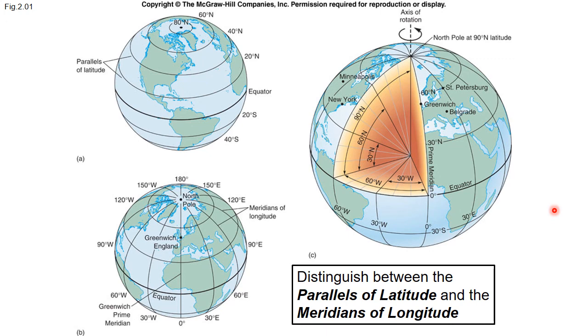But the main coordinate system that's used in geography is the system of latitude and longitude, the parallels of latitude and the meridians of longitude, which I will start with in the next part of lecture.